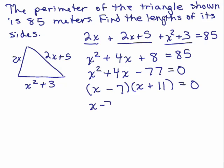So x minus 7 is 0 or x plus 11 is 0. So x could be 7 or x could be negative 11. Let's see if x could be 7.